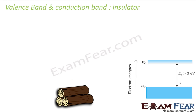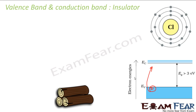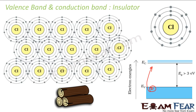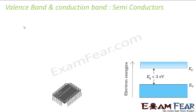In insulators, there is a huge difference between the valence band and the conduction band. Even if you apply an electric field, the electrons cannot jump to the conduction band, so they cannot conduct electricity. Wood is one example. Chlorine is also an example where the band gap is very high, so valence electrons cannot jump to the conduction band.